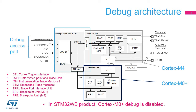The CTM connects the CTIs to allow simultaneous halting of both cores, triggering of trace, etc. DBG-MCU provides proprietary features such as freezing of timers during debug. External Trigger Input-Output allows an external signal to trigger debug or trace, or generates a trigger pulse for synchronizing external equipment or components.